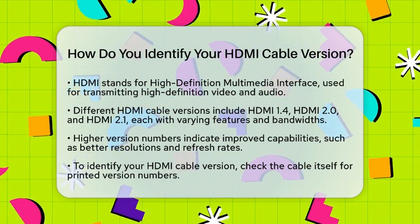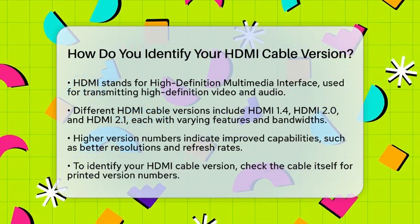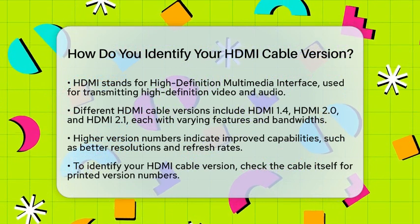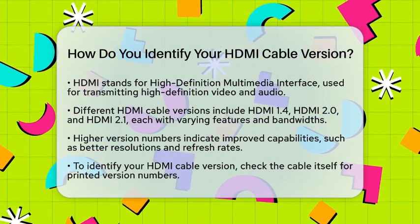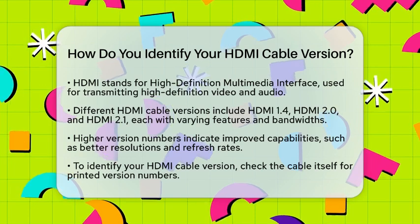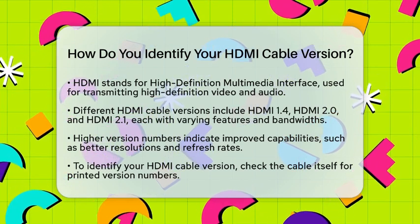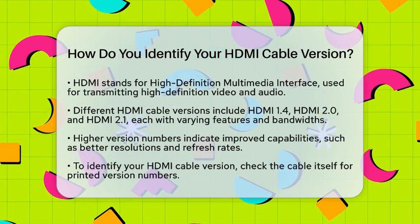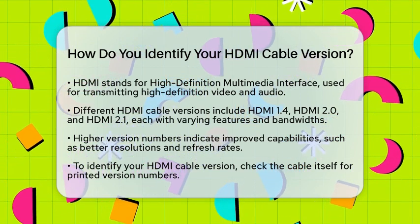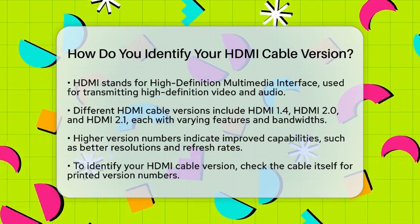There are several versions of HDMI cables, each with different features and maximum bandwidths. The most common versions you will encounter are HDMI 1.4, HDMI 2.0, and HDMI 2.1. As the version number increases, so do the capabilities, such as higher resolutions and faster refresh rates.